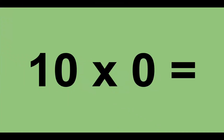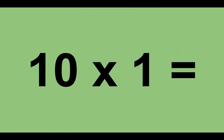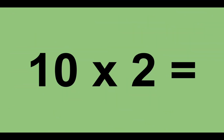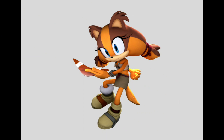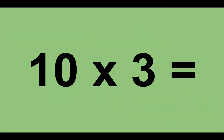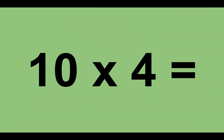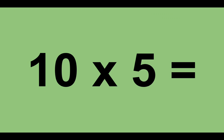Ten times zero equals zero. Ten times one equals ten. Ten times two equals twenty. Ten times three equals thirty. Ten times four equals forty. Ten times five equals fifty.